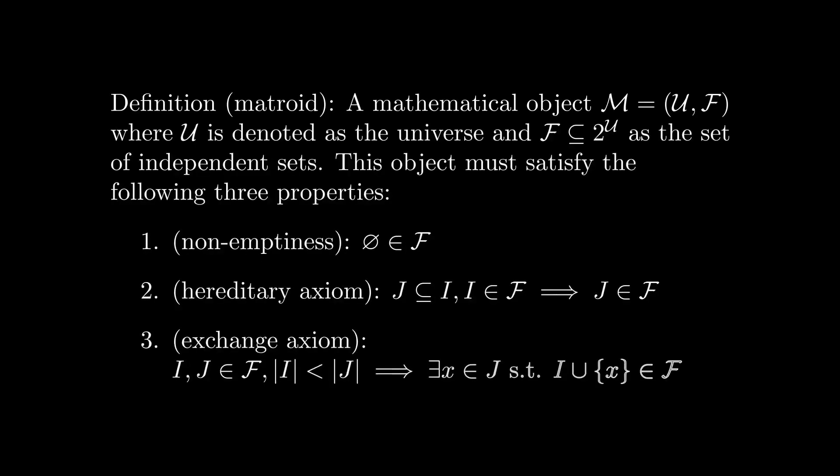Matroids can be thought of as a generalization of the notion of linear independence in vector spaces. A matroid consists of a tuple of sets. The first element is a finite set u, known as the universe, and the second element is a set of subsets of u, denoted as f. The elements of f are referred to as independent sets. For this tuple to constitute a matroid, it must satisfy the following three properties.